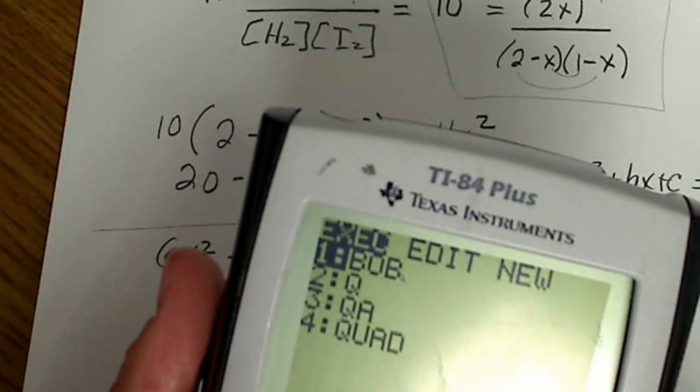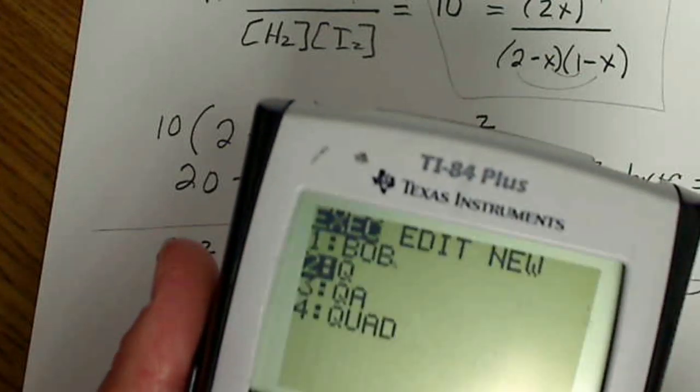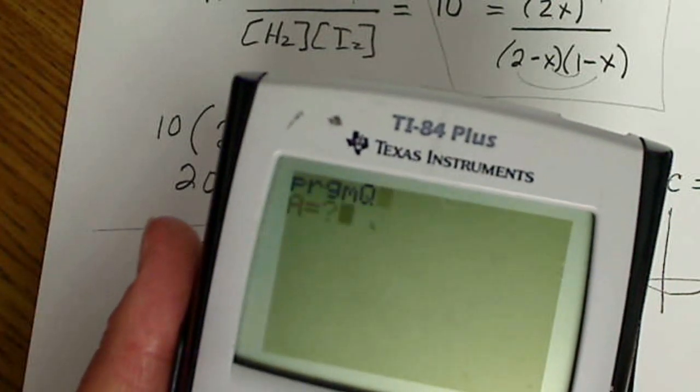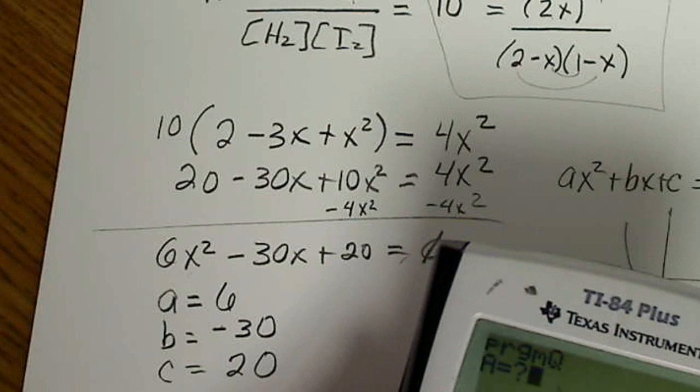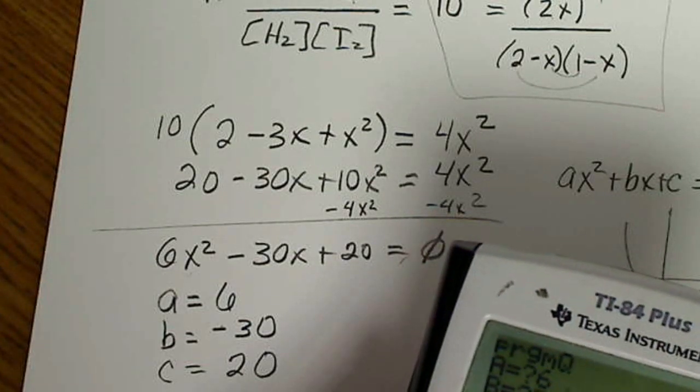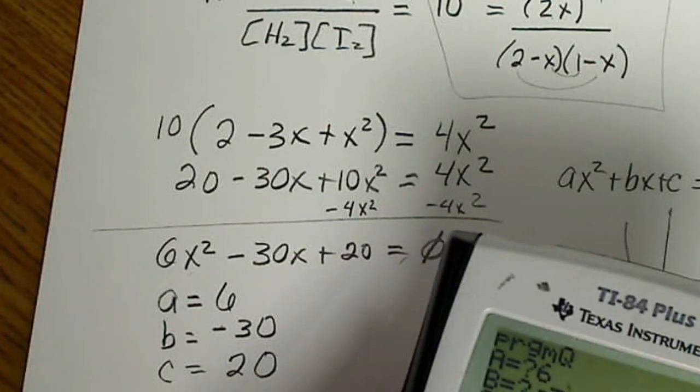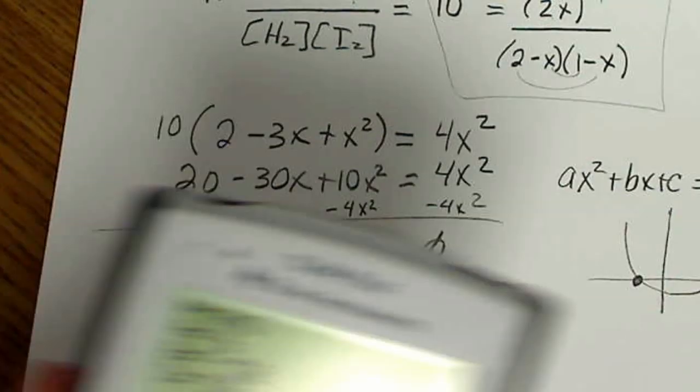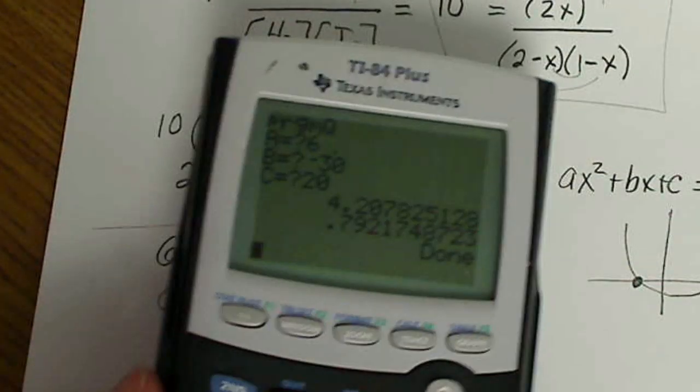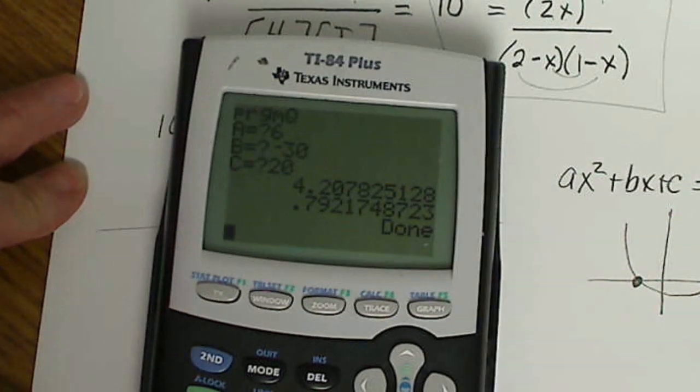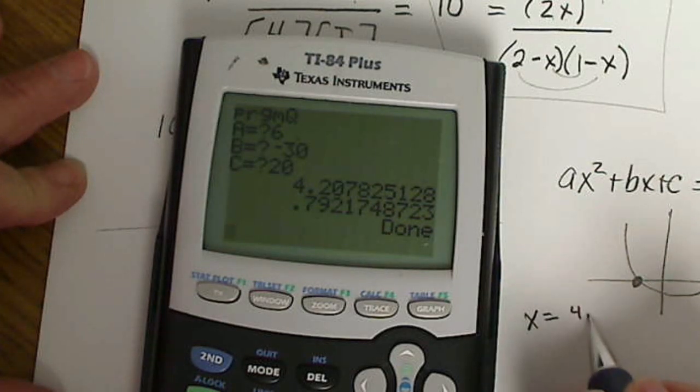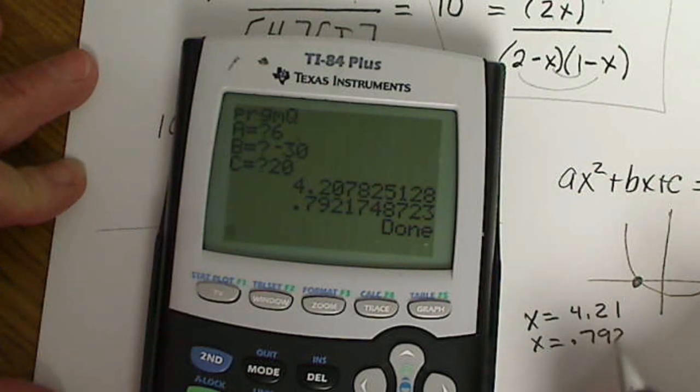I'll program that formula in, and it asks me for A. A is 6, B is negative 30, C is 20. And when I do that, I'm going to get two values for that. So I get X equals 4.21 and X equals 0.792.